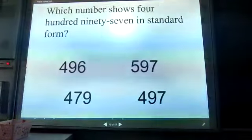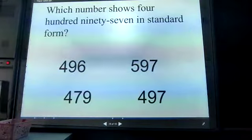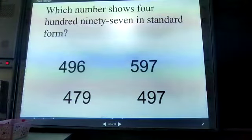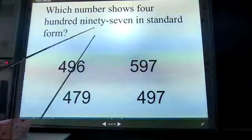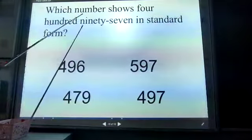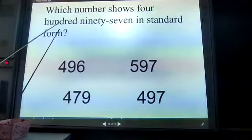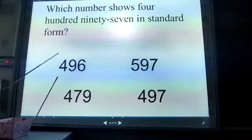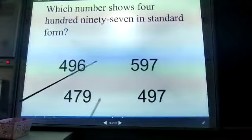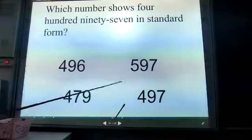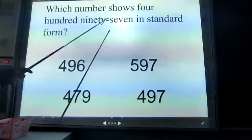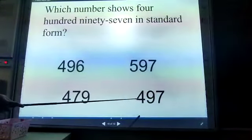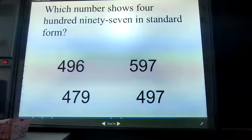Let's have some questions for you. Which number represents 497? 400 means at the hundreds place we need 4. So it can be this, this, or this. Now, where do you see 97? It's there. So the correct one is 497.